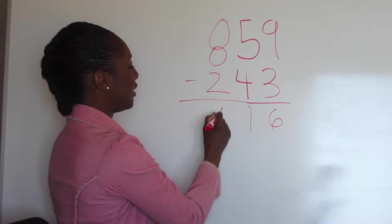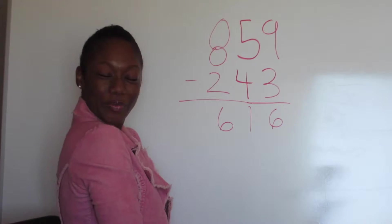8 minus 2: 7, 6, 616. Really simple right?